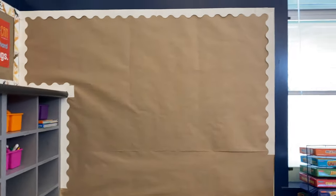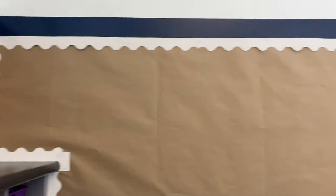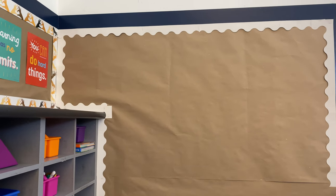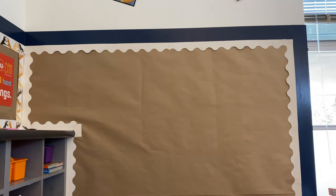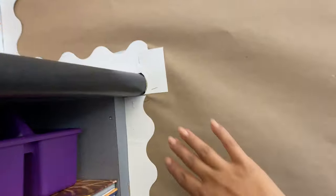I actually got this tip from Elementary in the Mitten — she's a YouTuber. She took her old bulletin board borders and just flipped them over to create a white border. I think it's a great way to save money and avoid a trip to the store. At the bottom part, I don't even know where that went — I think I lost it, or maybe one of the kids took it down and I just never replaced it. She actually got hers out of the trash can and put them back up, so that was a great save.